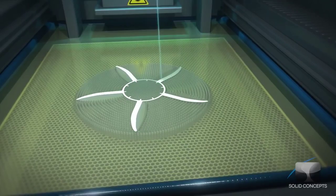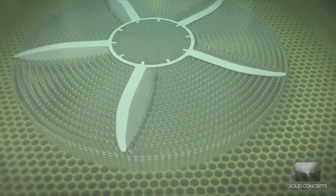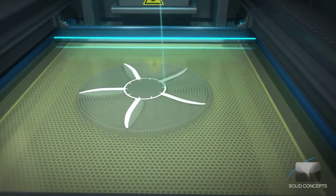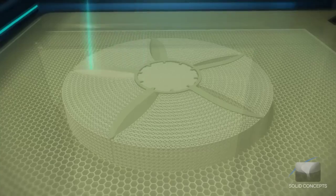As the laser traces the cross section on the surface of the resin, the liquid material is hardened on contact. Once a layer is complete, the build platform is indexed down to make room for the next layer.